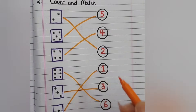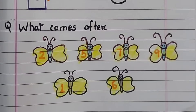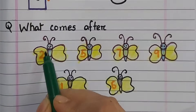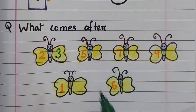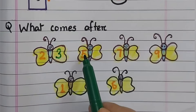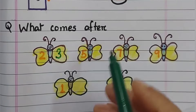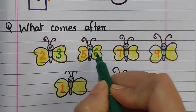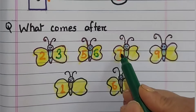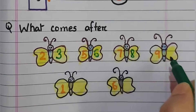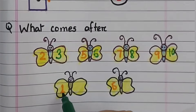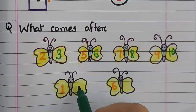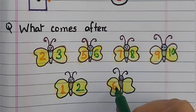Next question: what comes after? In this butterfly, number two is given, then what number comes after? Two, three — very good. Here five is given, then next number is six. Seven is given in the butterfly, next is eight. Nine is given, then ten. One is given, next number is two. Six is given, next is seven.